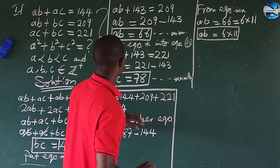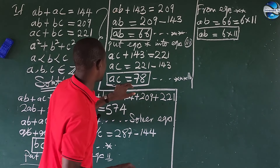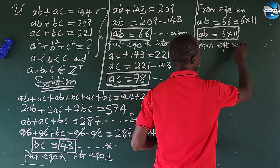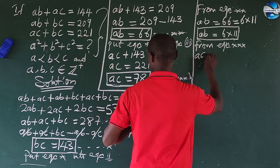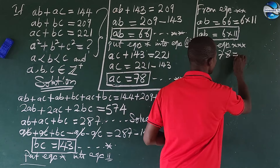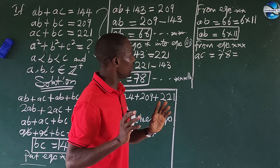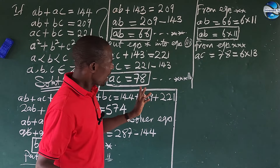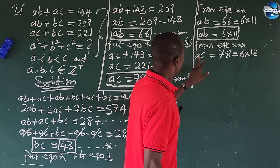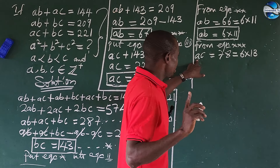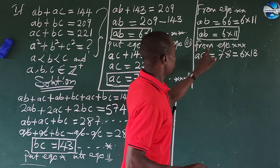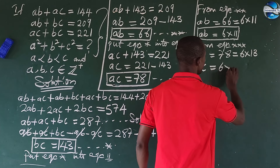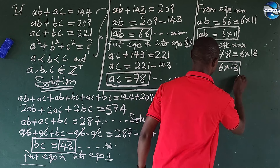We still have to confirm from the other cases. From equation star-star-star-star, we have AC equals 78, which can be written as 6 times 13. Since A is less than C, and our A is already established as 6, this means C equals 13. So AC equals 6 times 13.